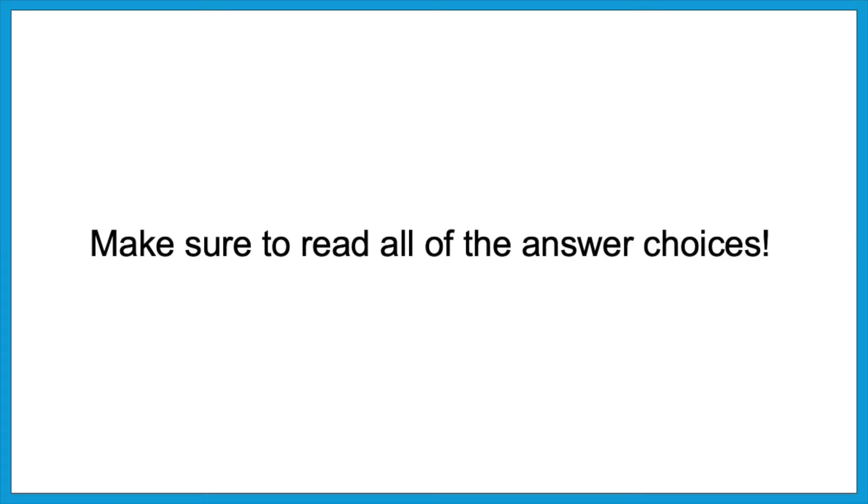Another common trap is when a choice has only partially correct information. For example, if the passage says 'Billy didn't like to play baseball when it was too hot outside,' there might be an answer that says 'Billy didn't like to play baseball because it made his feet hurt.' The first half is correct, but the reason is wrong. Be careful of answer choices where only a portion of the statement is correct. This is why you should read all of the answer choices — you might think you found the answer in A or B, but then find a better one in C or D.